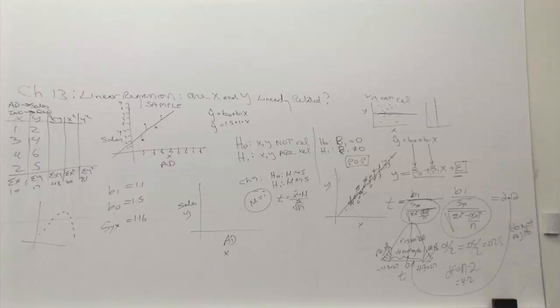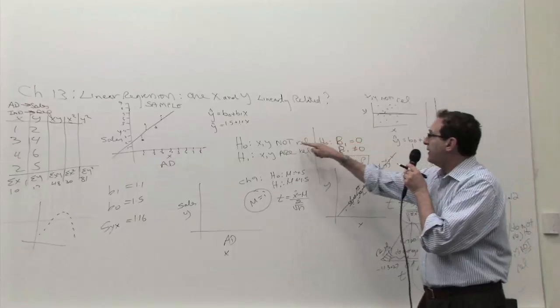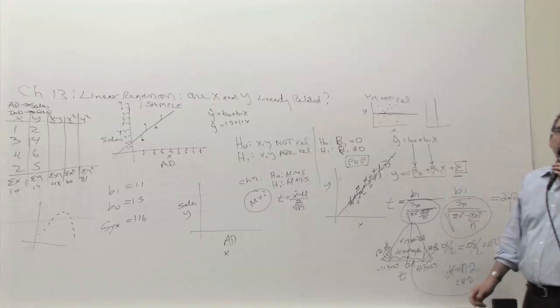And, if the original question was are X and Y related, what would you say? Yes or no? No. Not related. X and Y not related because we just accepted the H0. The H0 says that they're not related. It's simply following 101 is 2.